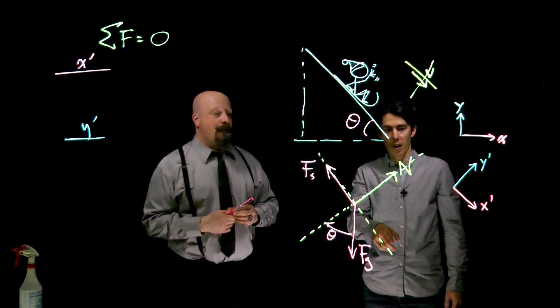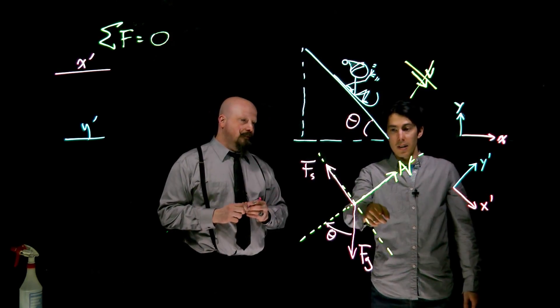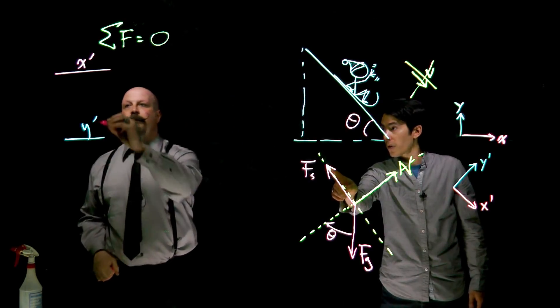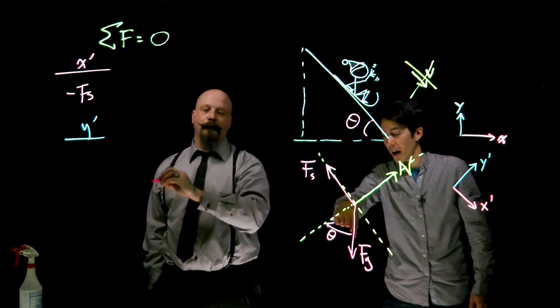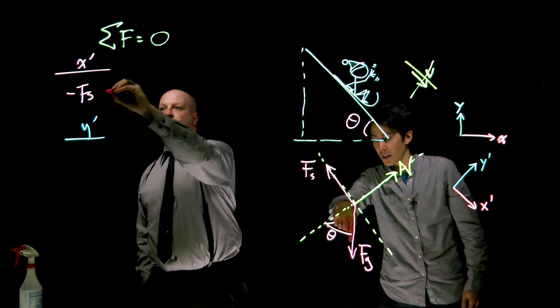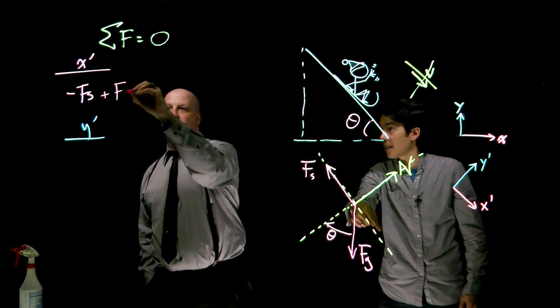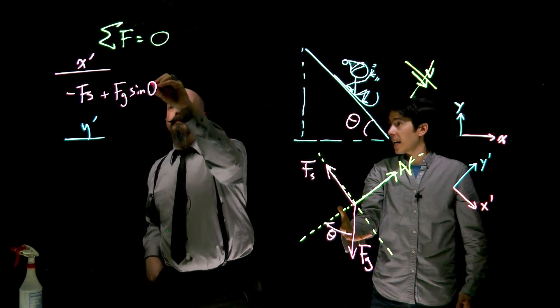Okay, so let me just sort of list off what we've got here for you. In the negative x direction we've got the force of static friction, no components necessary. We've got a component of gravity in the downwards or positive x direction that would be Fg times sine theta. Those two forces cancel out.